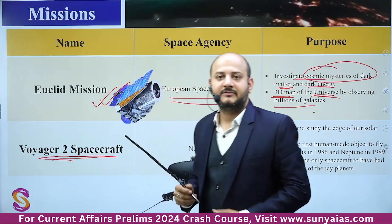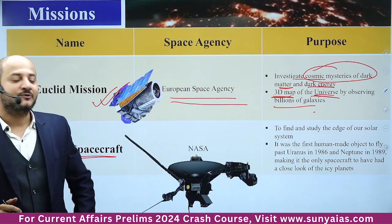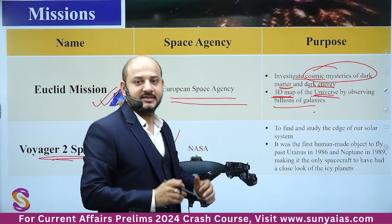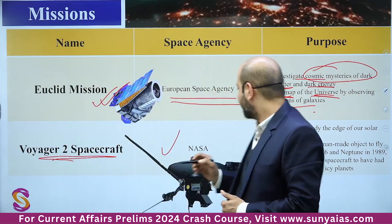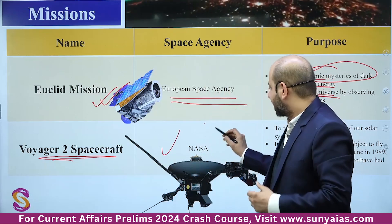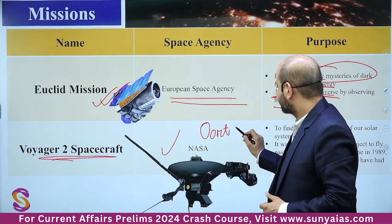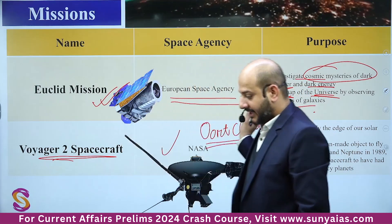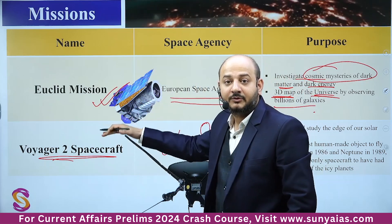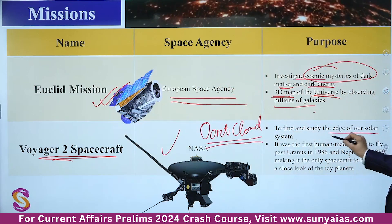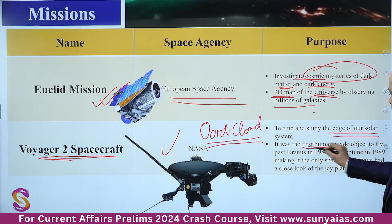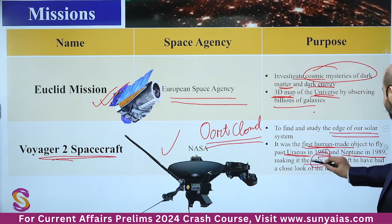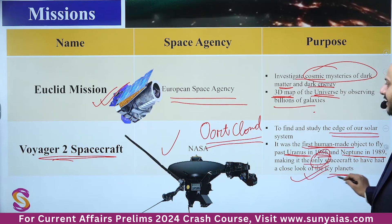Voyager 2 was launched by NASA to find and study the edge of our solar system — where the Kuiper Belt ends and the Oort Cloud begins. Oumuamua basically entered from the Oort Cloud into our solar system. Voyager 2 was the first human-made object to fly past Uranus in 1986 and Neptune in 1989, making it the only spacecraft to have had a close look at those icy planets.